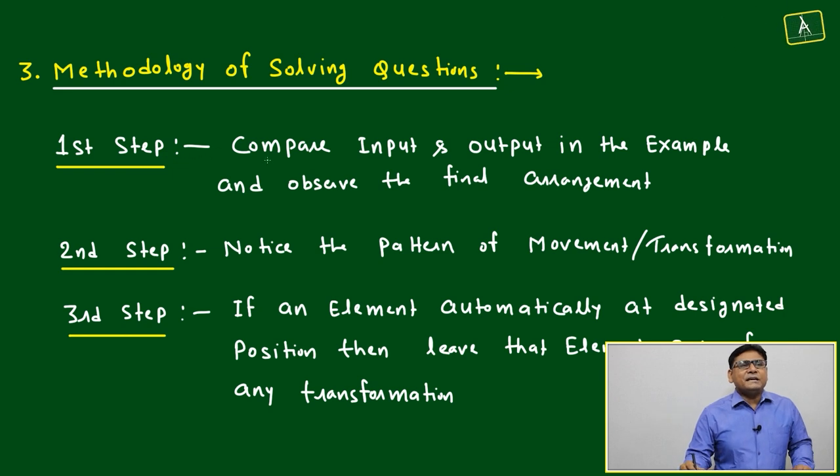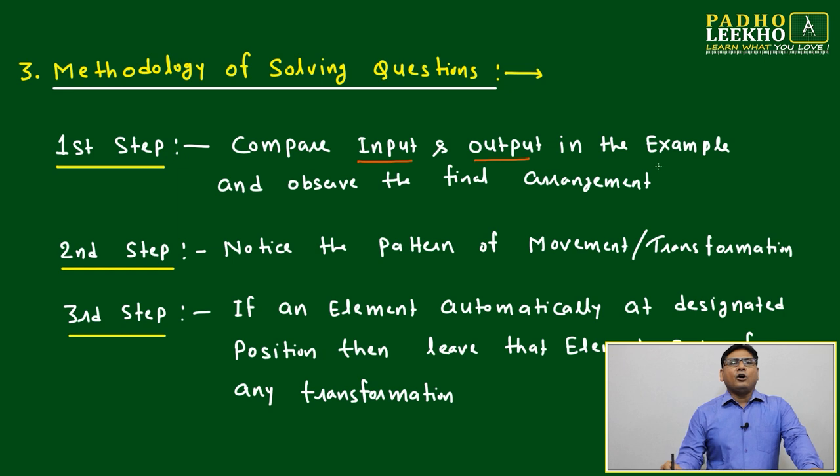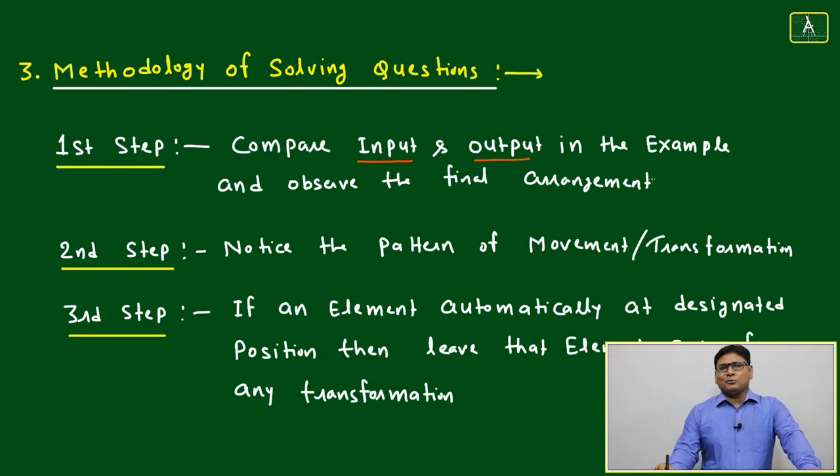What is the first step? First step is compare input and output in the example given and observe the final arrangement. Input and output whatever given in the example, accordingly what can be the final arrangement.